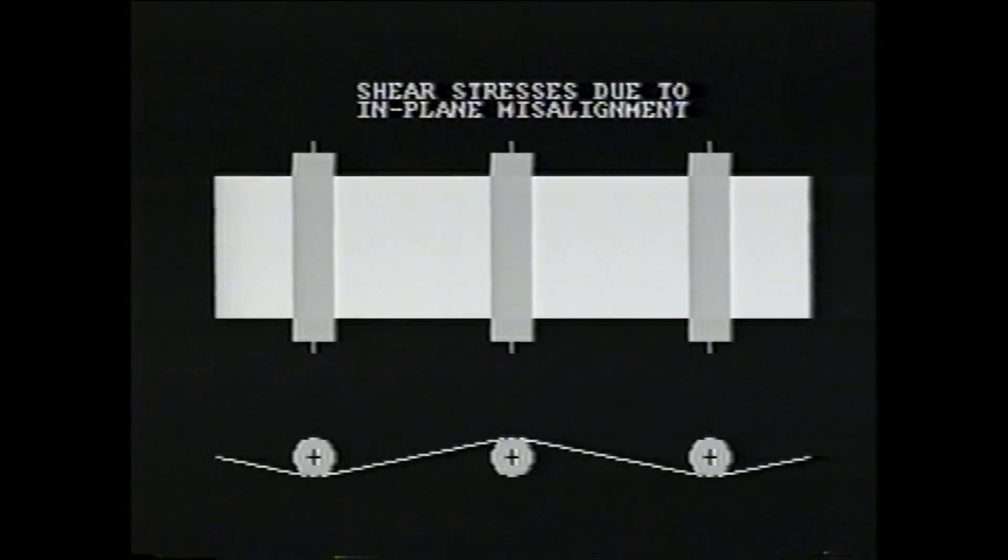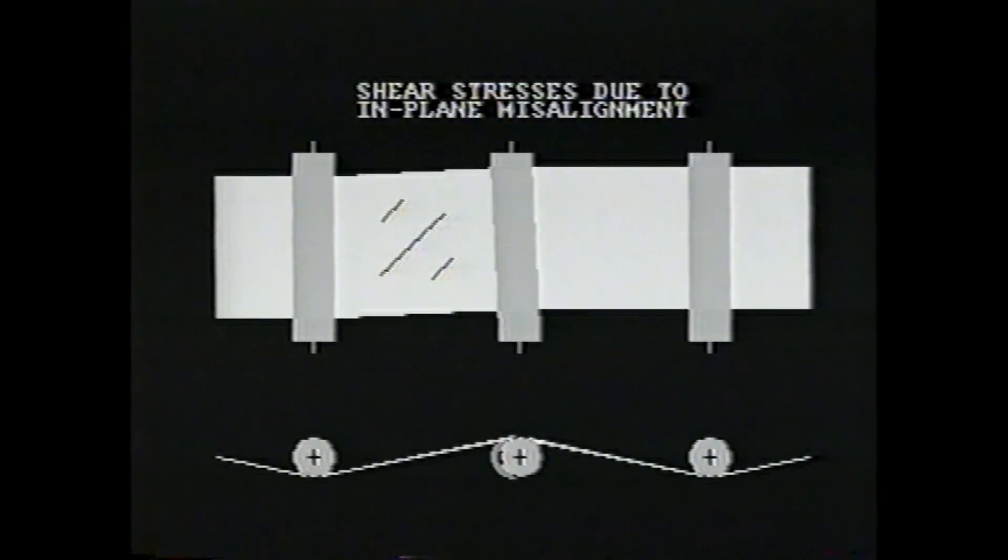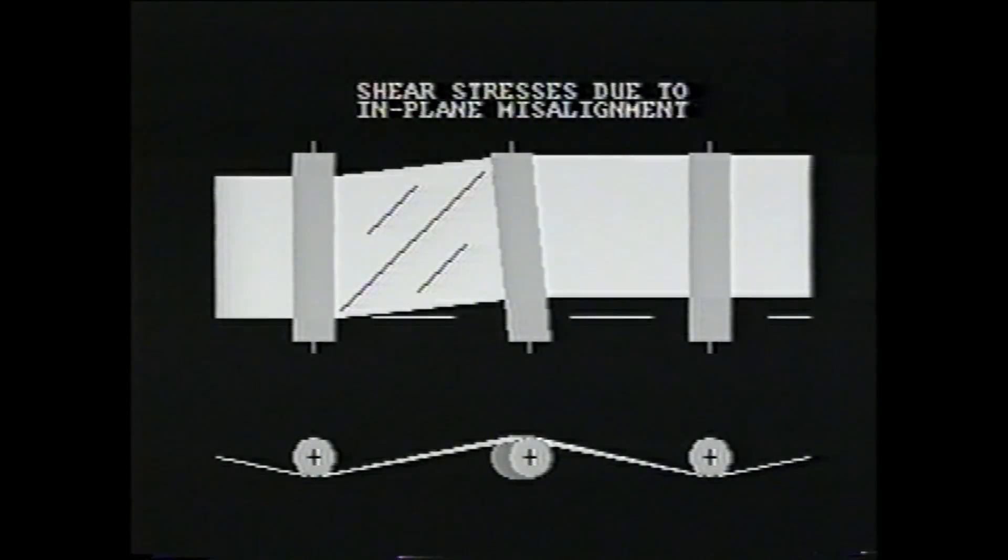Alignment of winder rolls affects web stresses. Looking at the center roll, if it is misaligned in the plane of sheet, the web is steered sideways. This generates shear stresses which tend to induce wrinkling on the upstream draw. The downstream draw may have somewhat less shear stress wrinkling.